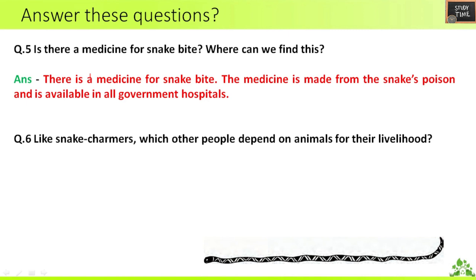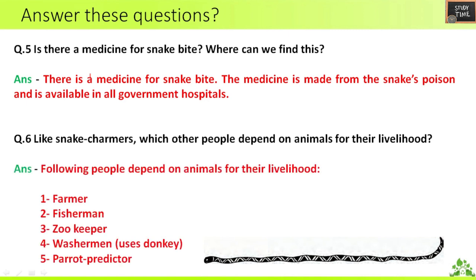Sixth question: like snake charmers, which other people depend on animals for their livelihood? They are farmers, fishermen, zookeepers, washermen, and parrot predictors. You can also write milkman.